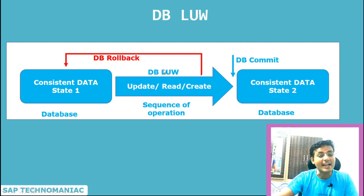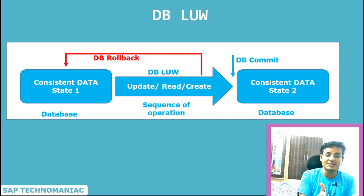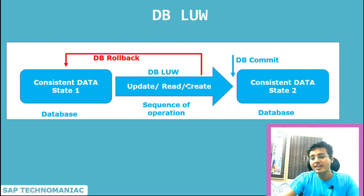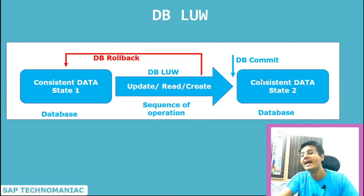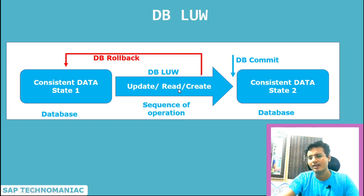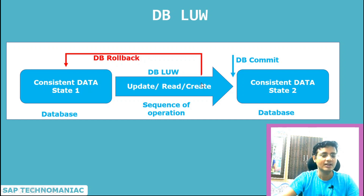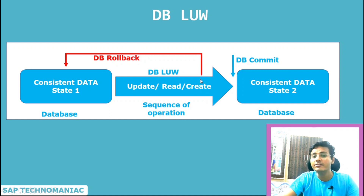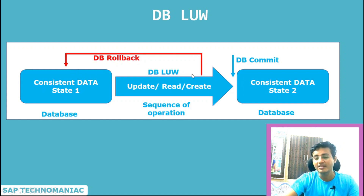Whatever operations are within this database LUW will execute fully or will not execute at all. It will not happen that half the operations are executed and half are not. Suppose everything goes well and all updates are done — then the database LUW leads to the next consistent state of the database, and a new database LUW opens for another operation. At any point if something goes wrong, whatever changes have been made till that point will be reverted back and the database will reach the last consistent database state. This is called rollback.